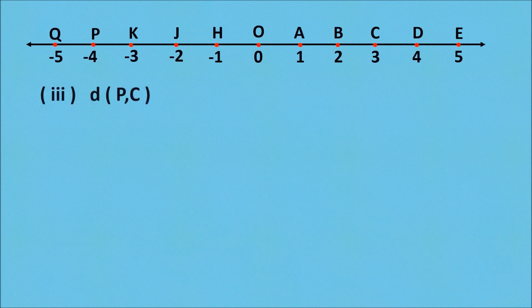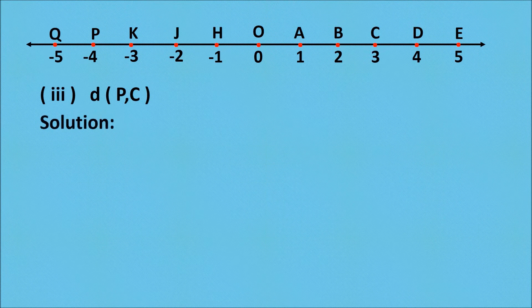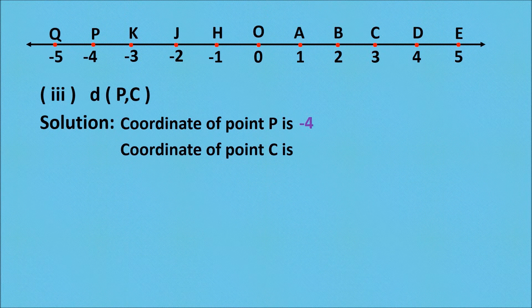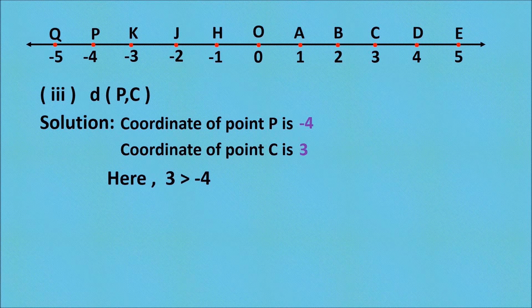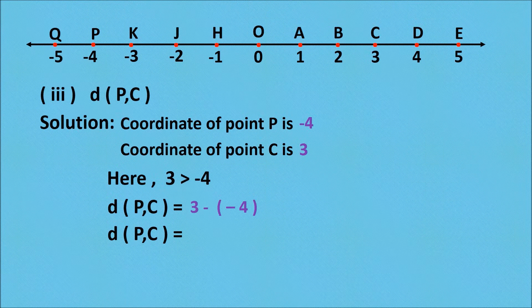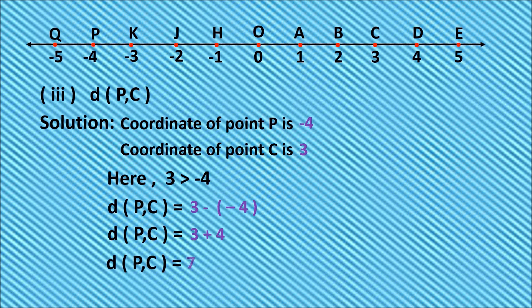Next question: find distance PC. The coordinate of point P is minus 4 and the coordinate of point C is 3. Among minus 4 and 3, the value 3 is greater than minus 4. Distance PC equals greater coordinate minus smaller coordinate, that is 3 minus (minus 4). Solving the bracket, minus into minus is plus, so 3 plus 4. Therefore, distance PC equals 7.